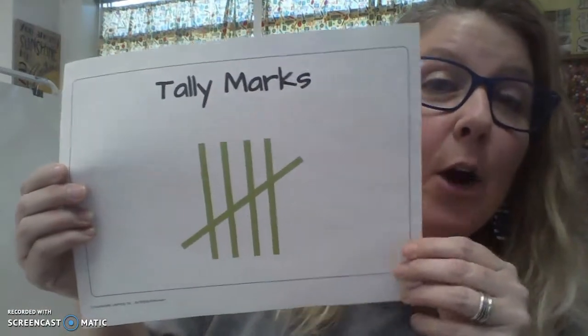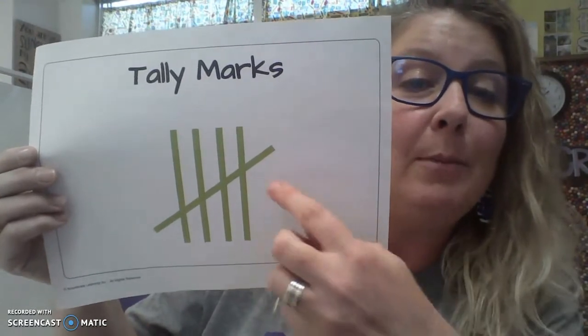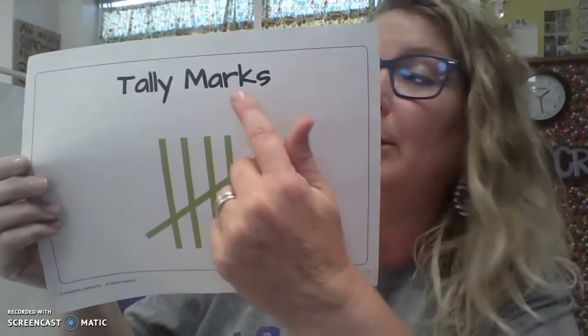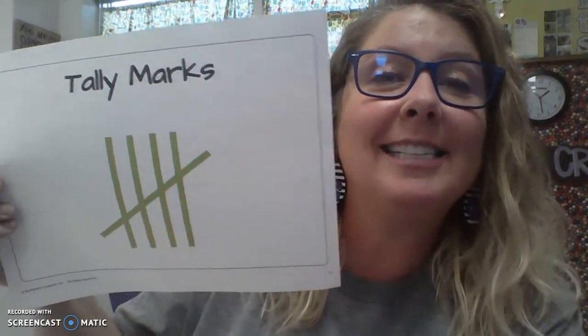All right. The next one is tally marks. So tally marks are a way of counting. We do one, two, three, four, and then we put the slash. Say it with me. Tally marks. Tally marks.